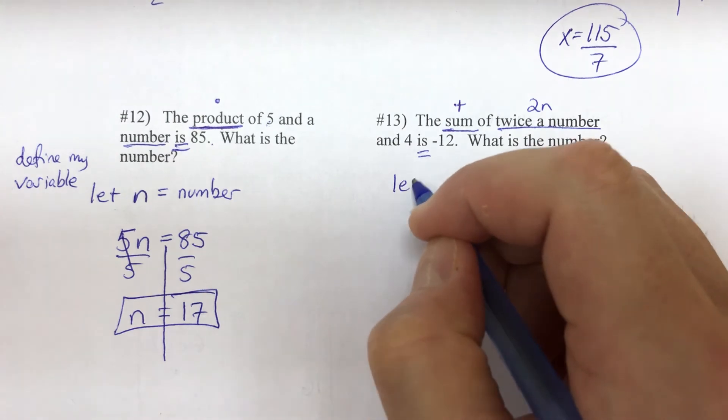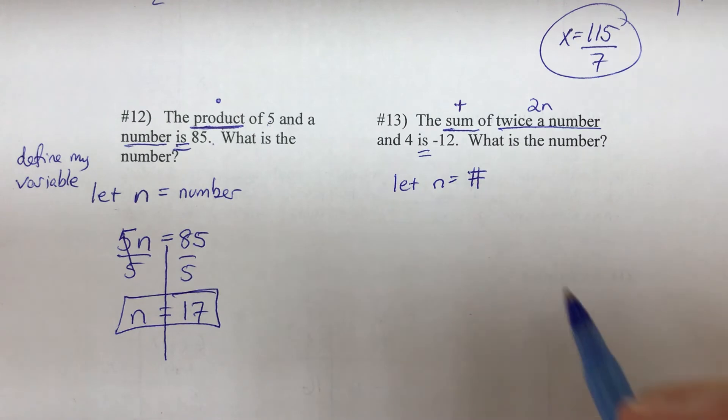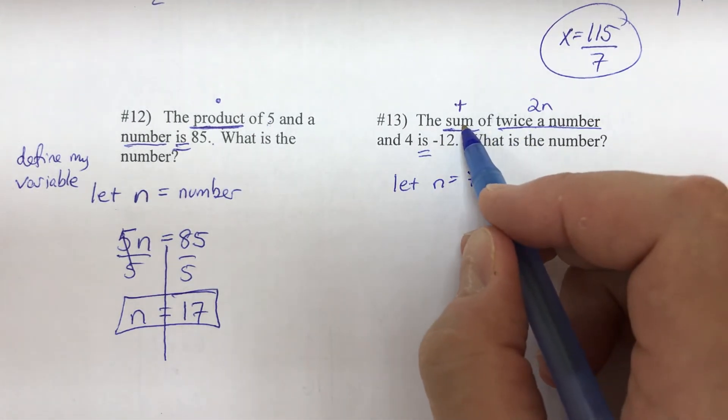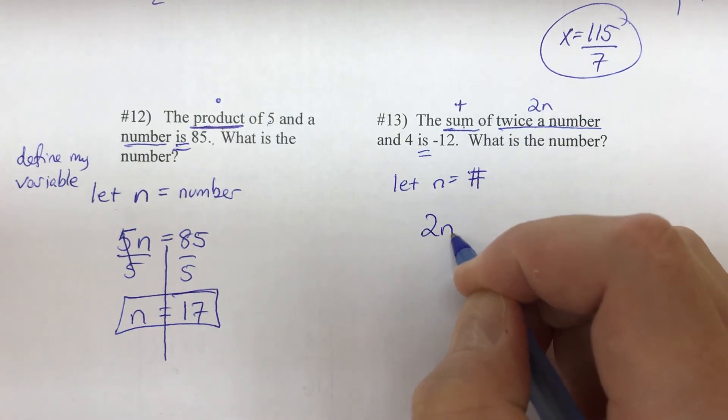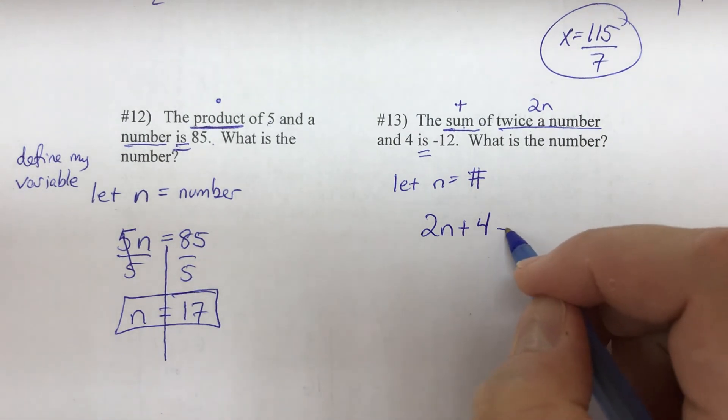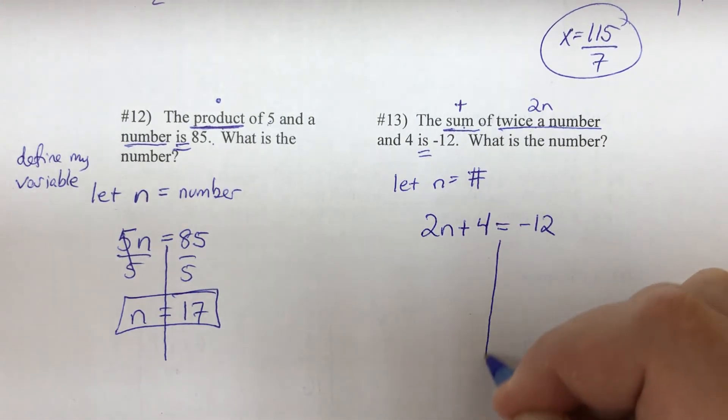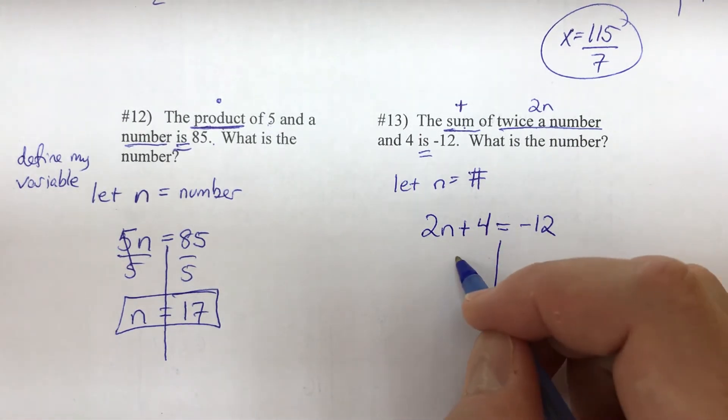Well, let n equal the number. And now we need to make the equation. We're going to add two things: twice a number, and 4. And 4 equals negative 12. And now we solve.